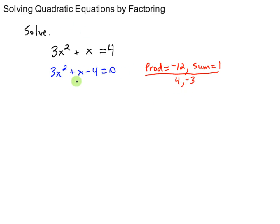And so two numbers that give us this product and this sum are positive four and negative three. So I'm going to use those numbers now to split this x and rewrite it as positive four x minus three x. And then leave my outer terms the same.